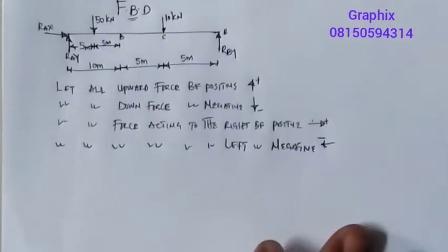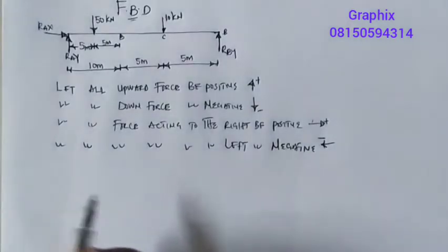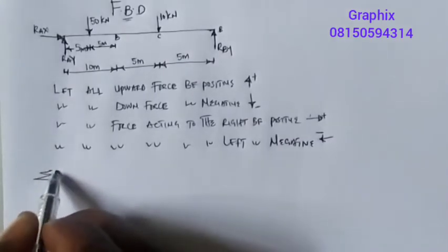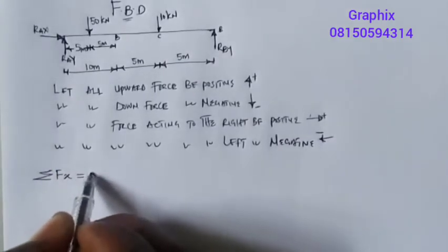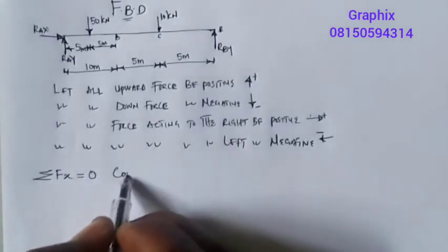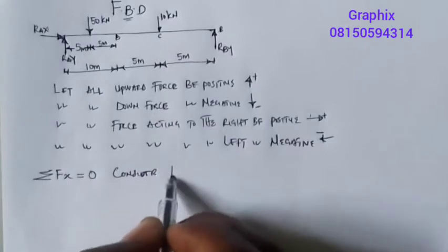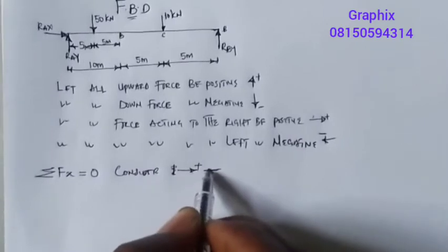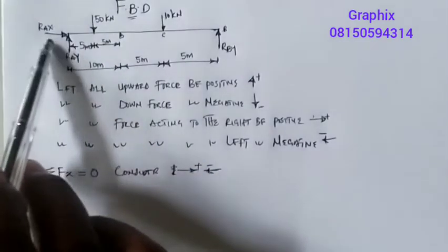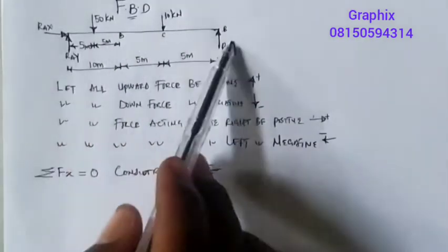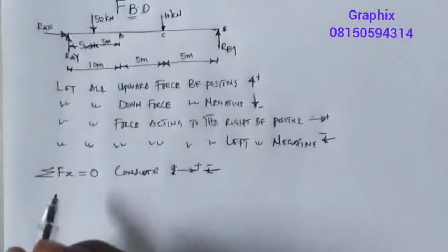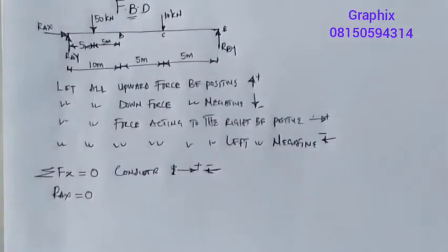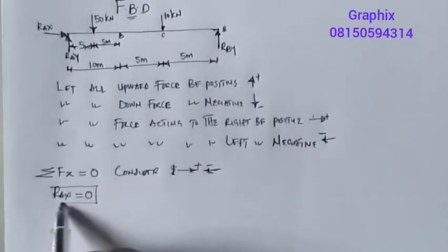There are three conditions necessary for equilibrium. The first condition is summation of Fx equals zero. We have just one horizontal force, RoAX, and it is the only one, so RoAX equals zero.